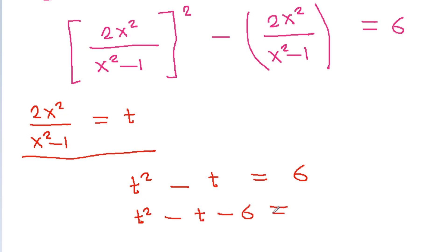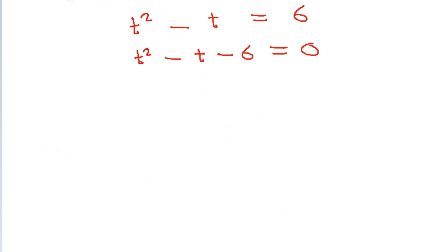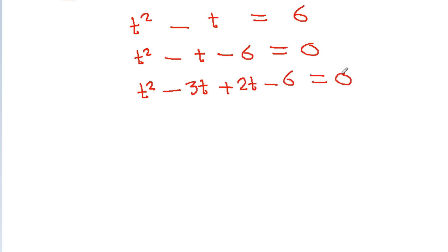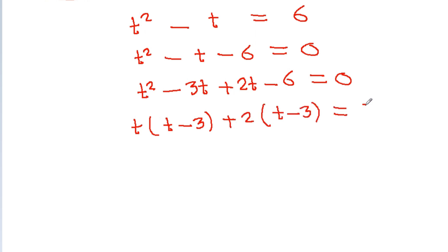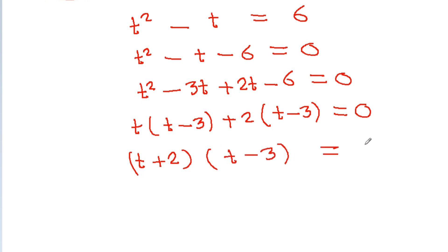So t² minus t minus 6 is equal to 0. This factors as t² minus 3t + 2t minus 6 equals 0, giving t(t-3) + 2(t-3) equals 0, and therefore (t+2)(t-3) equals 0.